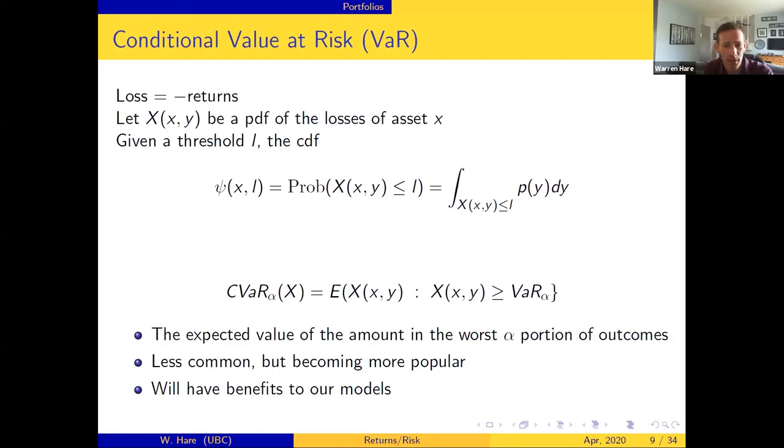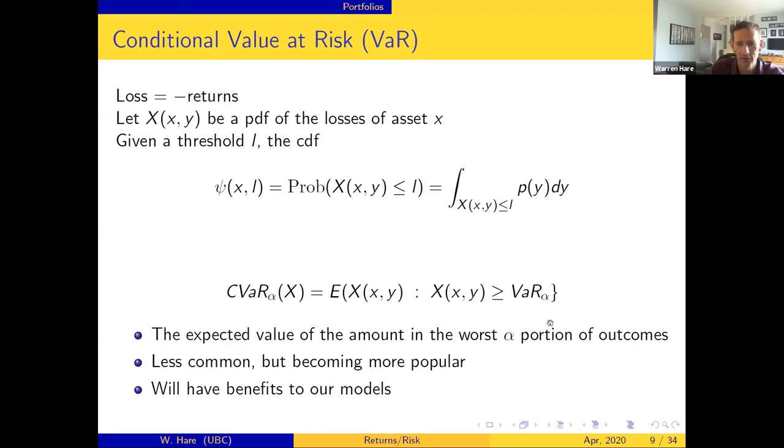So that's captured in the next one - this is called the conditional value at risk. One of the reasons I had to introduce value at risk is it's right here in conditional value at risk. Same setup as before, now you pick that threshold alpha and the conditional value at risk gives you the expected value of everything past that value at risk threshold. So what this means is that if you give me a number alpha, the conditional value at risk is the expected value of how much you will lose in the worst alpha portions of the outcome. So you say your threshold is five percent, conditional value at risk says the expected value in the worst five percent of scenarios is this much.